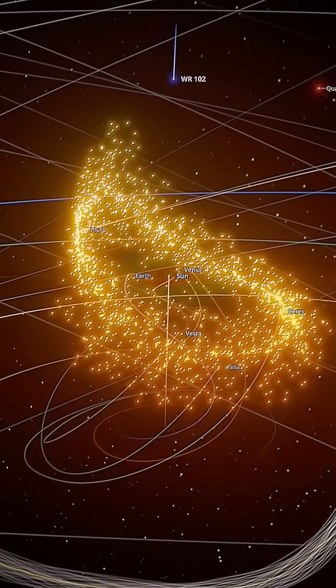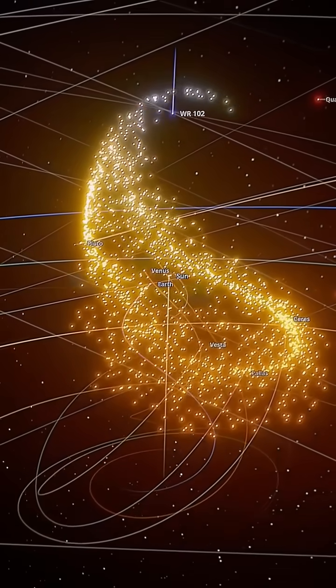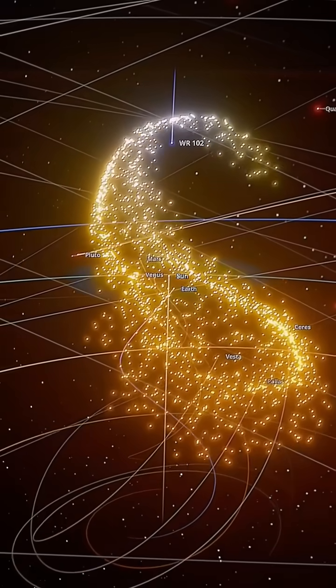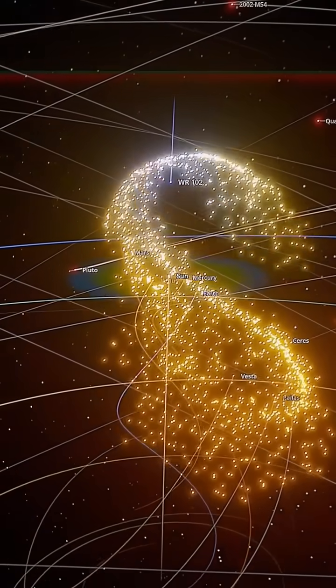The gas giants begin losing their outer layers to space as the heat intensifies. The orbital paths of all planets become unstable as they're pulled toward the approaching star.